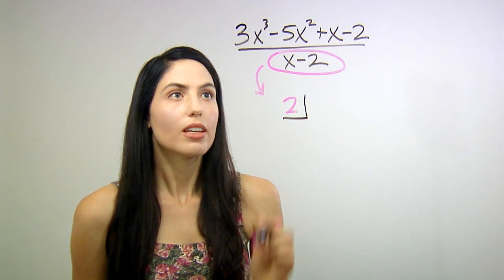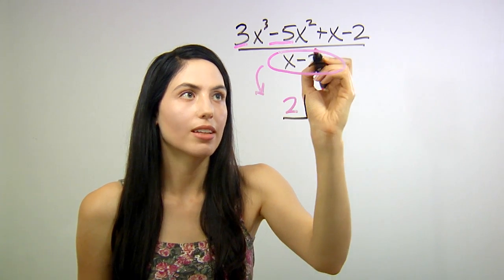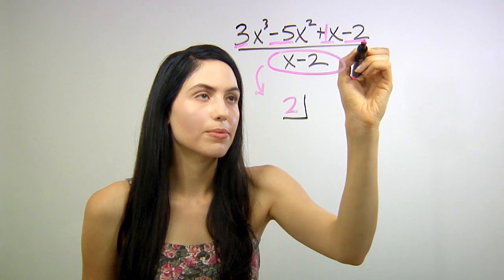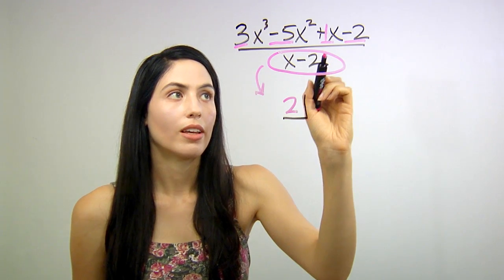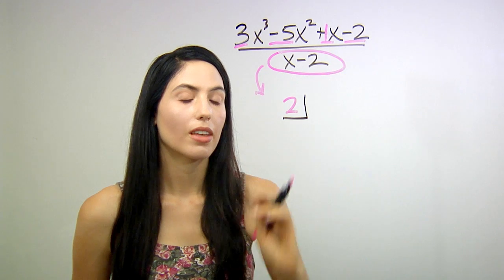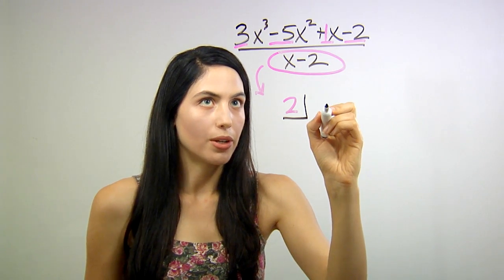Next step, take every coefficient from your polynomial on the top, which are 3, negative 5, 1, and negative 2, and put them in a row here down below.